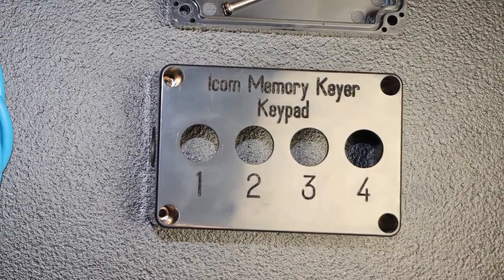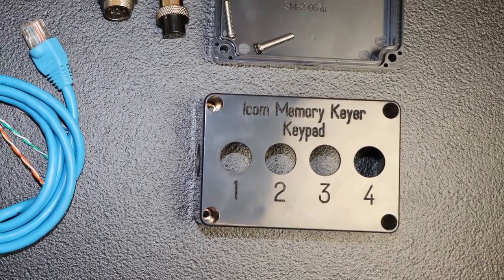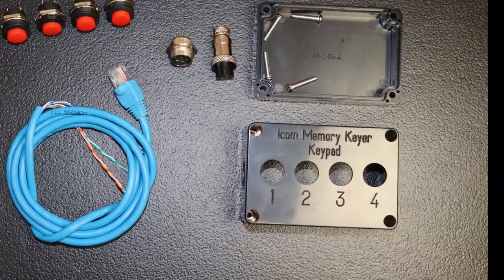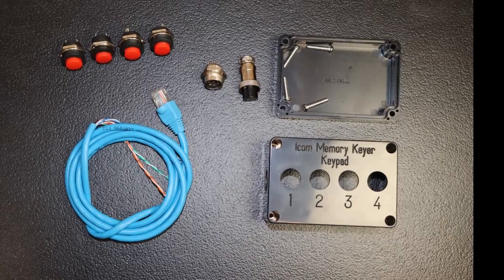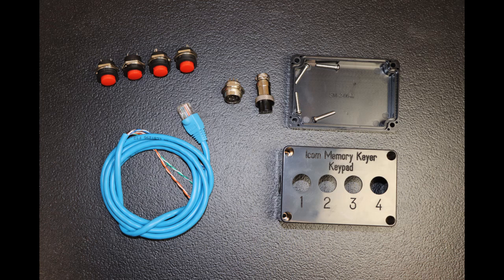For this project, we're going to build the keypad into a small project box. We still want the hand mic connected, so we're going to build the box with a cord and a male plug to plug into the radio mic connector, and it will have a mating jack like the one on the radio, so the microphone can still be used. We'll need an 8-conductor wire so that we can pass all of the mic connector signals through the box.